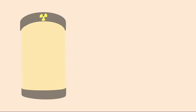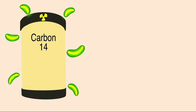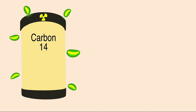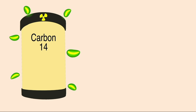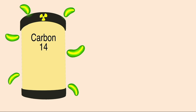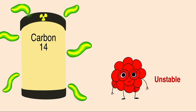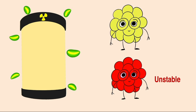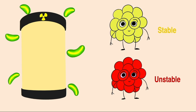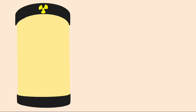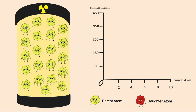So let's look at a radioactive source — carbon-14. We'll represent the unstable nuclei as red and the stable nuclei as yellow. Carbon-14 has a half-life of about 5,700 years.